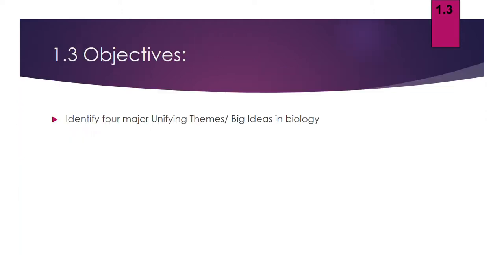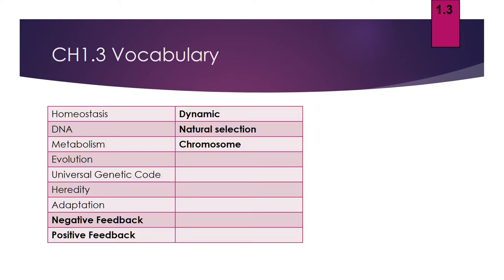The only real objective here is to look at four major unifying themes in biology and some of the big ideas that make them up. Vocabulary should look familiar from last section. You're going to see the words homeostasis, DNA, metabolism, evolution, universal genetic code, heredity, and adaptation. In addition, we're going to look at negative feedback, positive feedback, dynamic, natural selection, and chromosome.